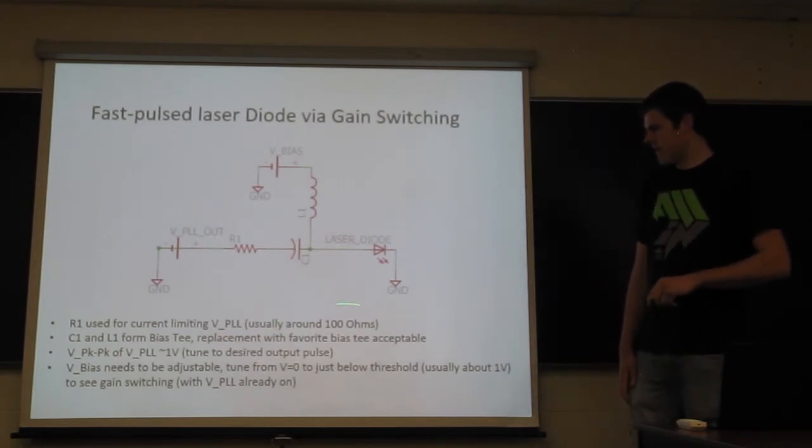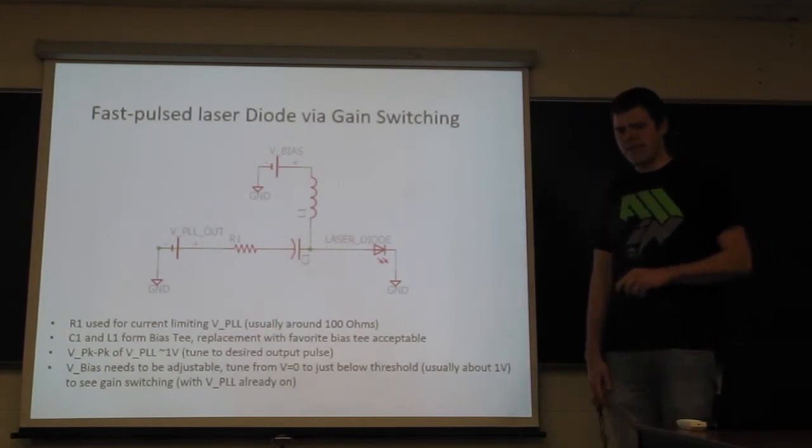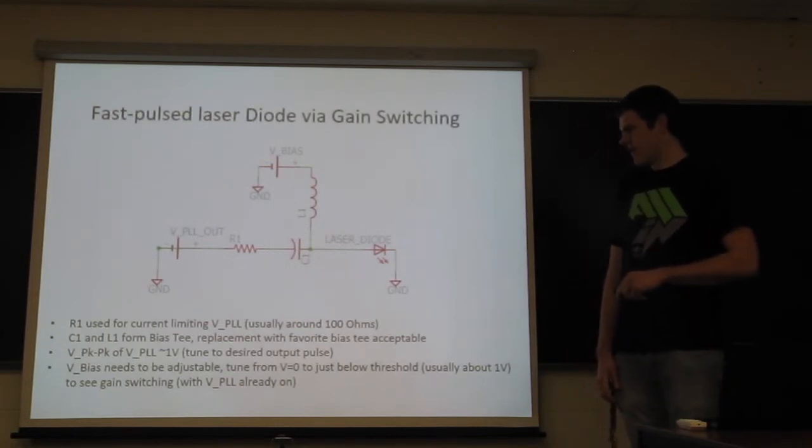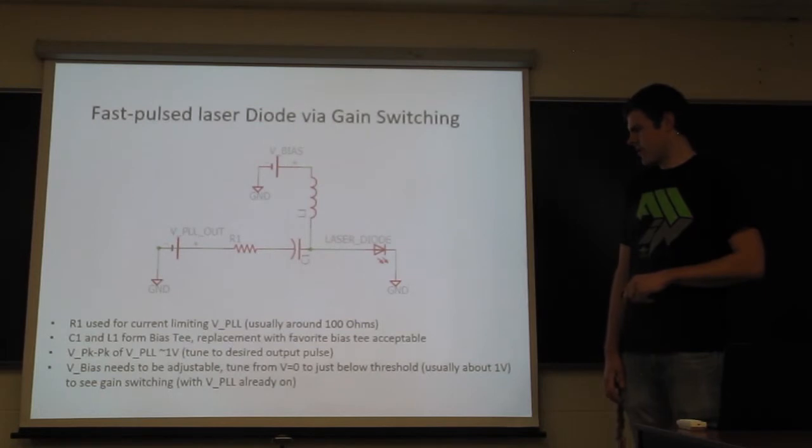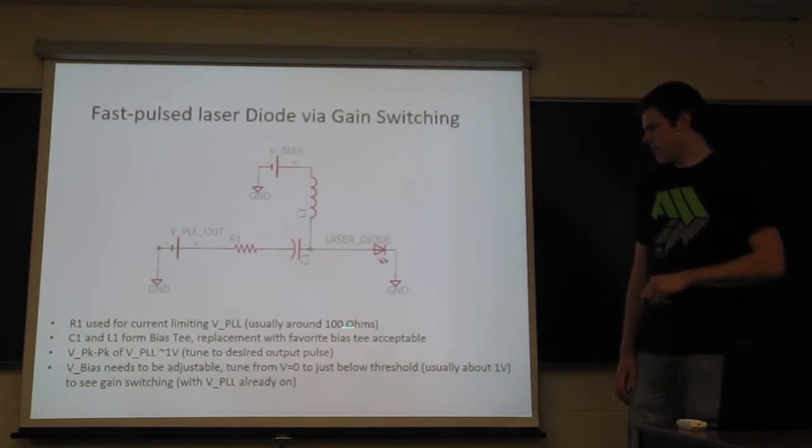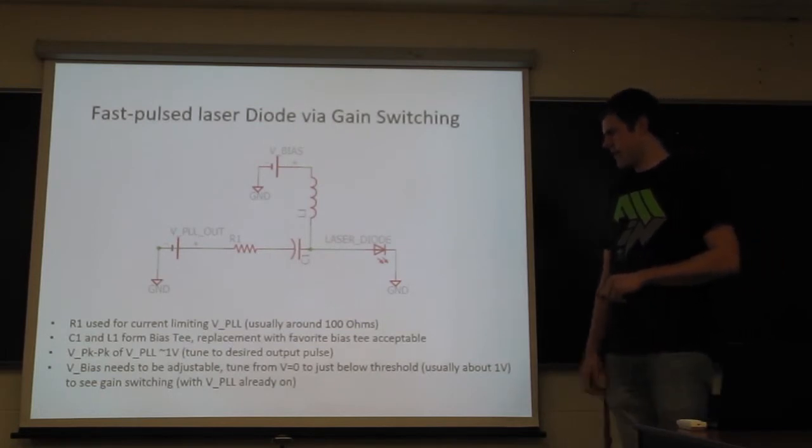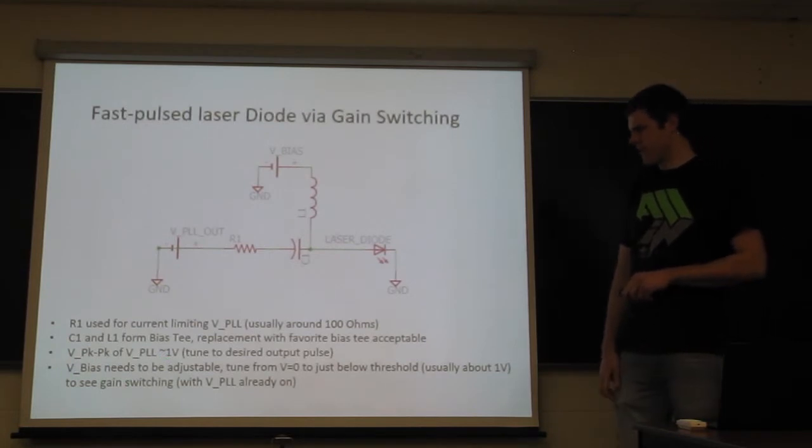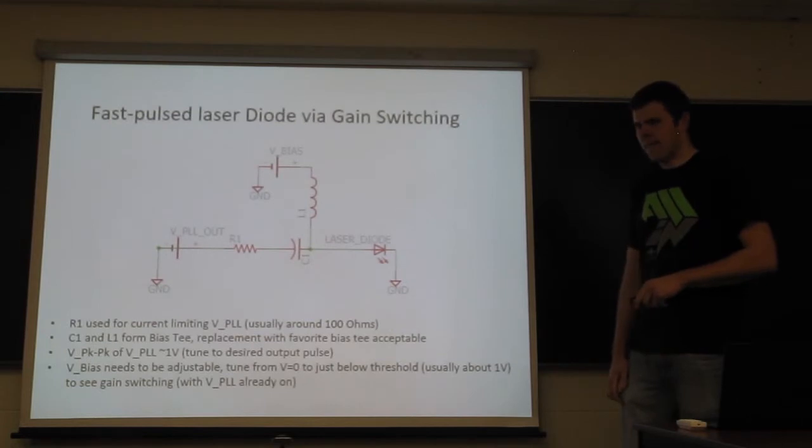Here are some rough specifications for parameters that you might want to use to get the gain-switching to occur. You roughly need to match the impedance of the laser diode, and one thing to note is you want your bias to be adjustable, and this allows you to tune the pulses.